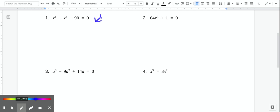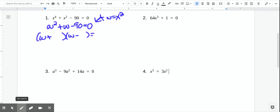This is one of those W problems. We're going to let W equal X squared. And then we're going to rewrite this as W squared plus W minus 90. Now it's something that we can factor. So the signs are going to be different. So I'm looking for factors of 90 that give me positive 1. So I think 10 and 9.